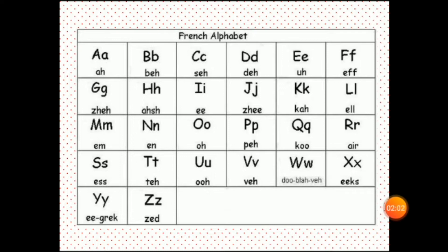So this was the pronunciation of the alphabets. Let me repeat it for you: A, B, C, D, E, F, G, H, I, J, K, L, M, N, O, P, Q, R, S, T, U, V, W, X, Y, Z. Now let's learn some vocabulary related to them.